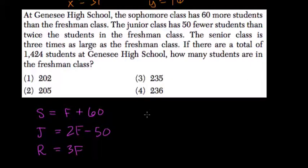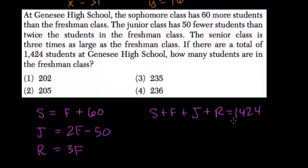If there are a total of sophomores plus freshmen plus juniors plus seniors equals 1,424 students, how many students are in the freshman class? So they're just giving us enough information here to solve for the freshman class.